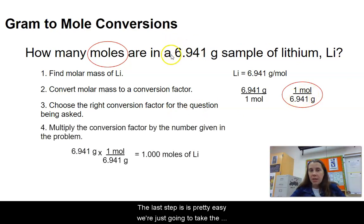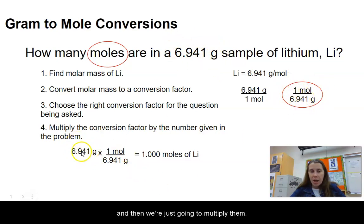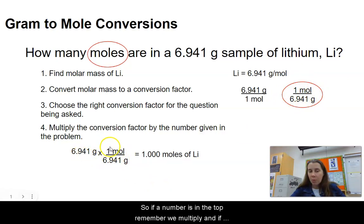We're just going to take the number that was given in our problem. Here, that's 6.941, which is there, the conversion factor we identified, and then we're just going to multiply them. If a number is in the top, remember we multiply, and if a number is in the bottom, we divide.